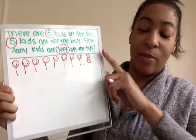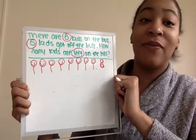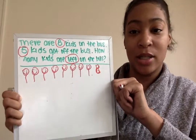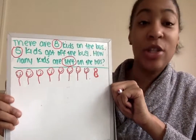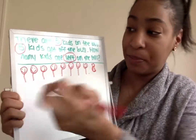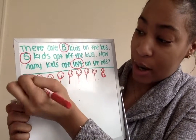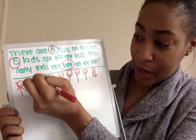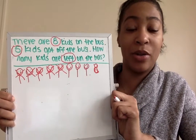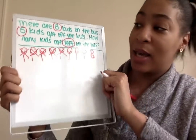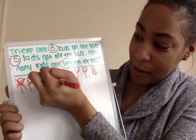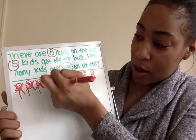So now we know that five kids got off the bus. So what should we do next, Kipsters? We should cross off five kids to represent the five that got off the bus. So 1, 2, 3, 4, 5. Now let's go back and make sure that we crossed off five kids: 1, 2, 3, 4, 5.